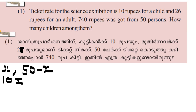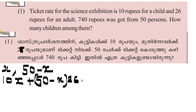We will add the ticket rate to 740. Let's do this. Let x be the number of children, so the equation is: 10x plus 50 minus x into 26 equals 740.